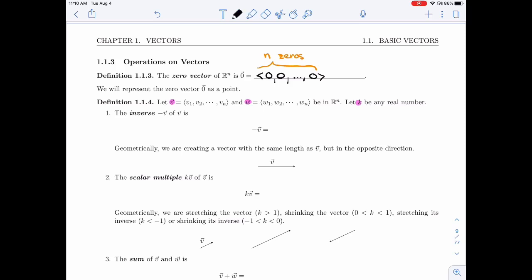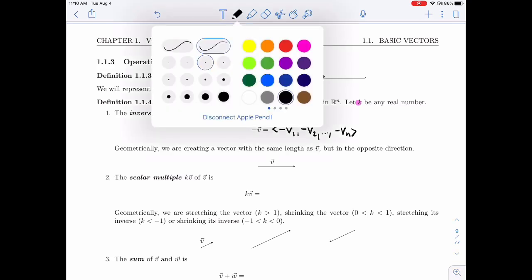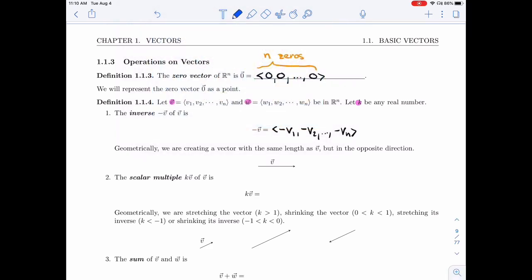When I write minus V, I'm going to call it the inverse of V. And its components are just minus the component of V. So geometrically, what we're doing is we're taking a vector with the same length of V, but we're flipping the direction. So opposite direction.